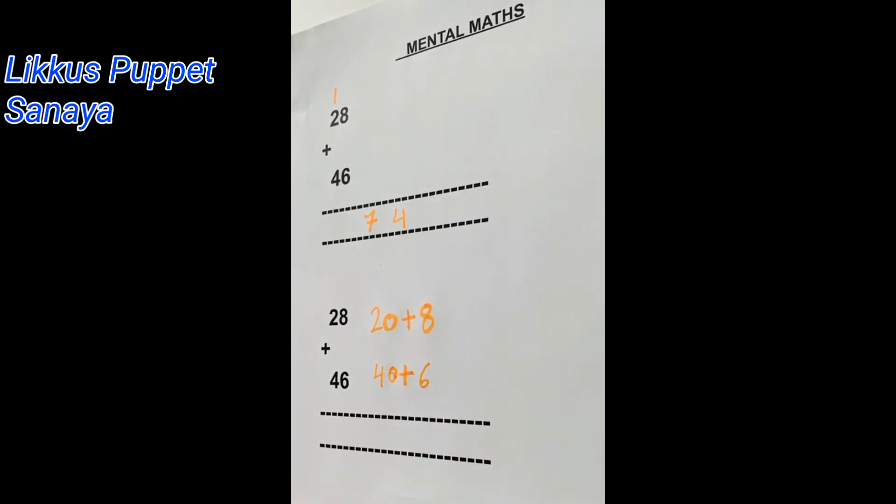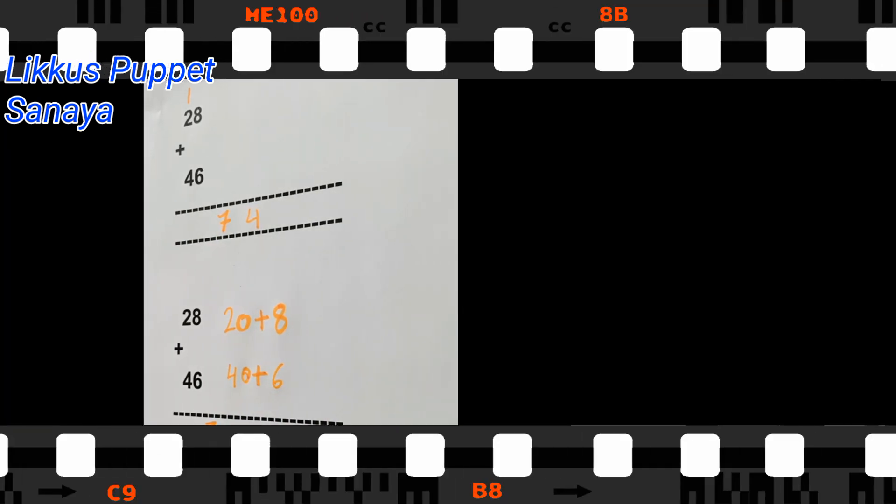And now we are going to add all the numbers. Like this. 20 plus 40 is 60. 60 plus 8 is 68. 68 plus 6 is 74. So let's just write down 74. All right. So now that's the correct answer.